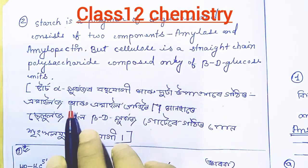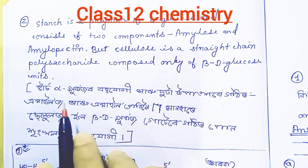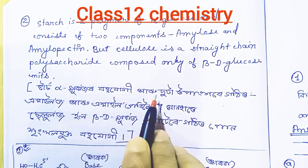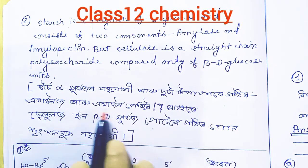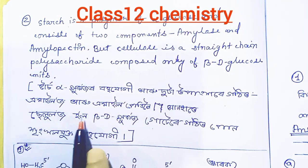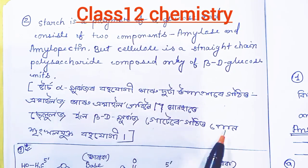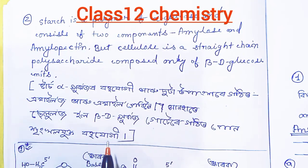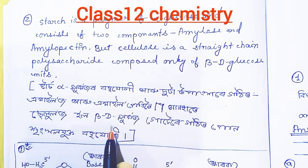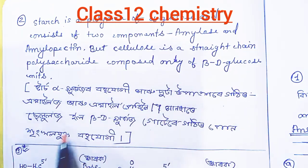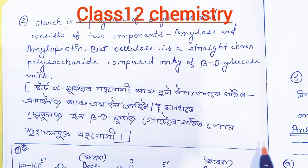Starch consists of amylose and amylopectin. Starch is alpha-glucose based, which forms alpha glycosidic linkages. Cellulose, on the other hand, is formed from beta-glucose, resulting in beta glycosidic linkages. That is the most actual structural difference between starch and cellulose.